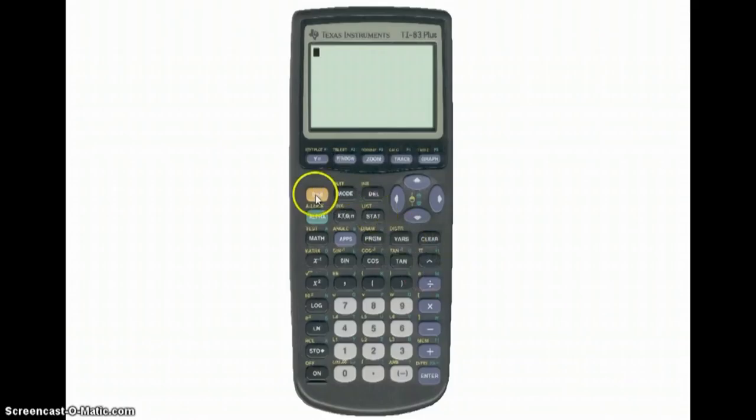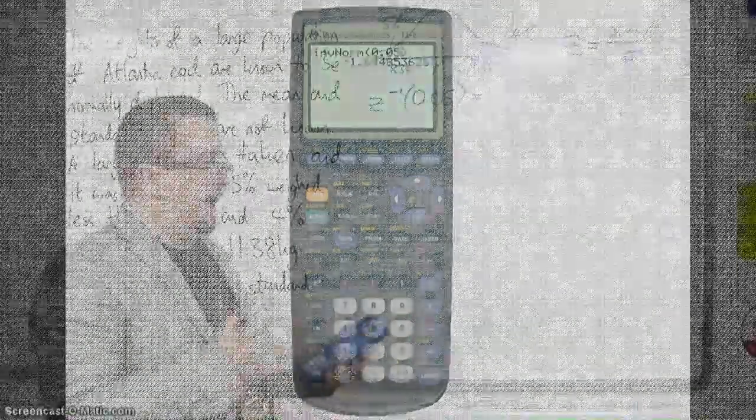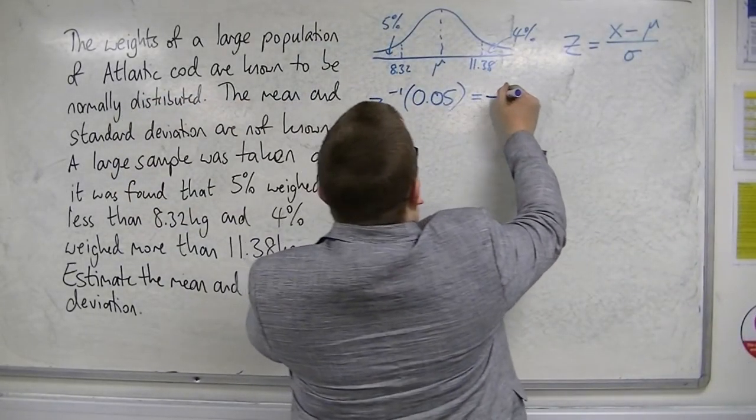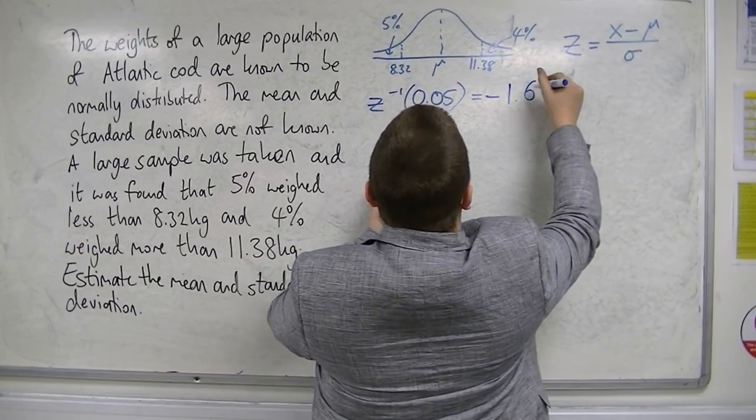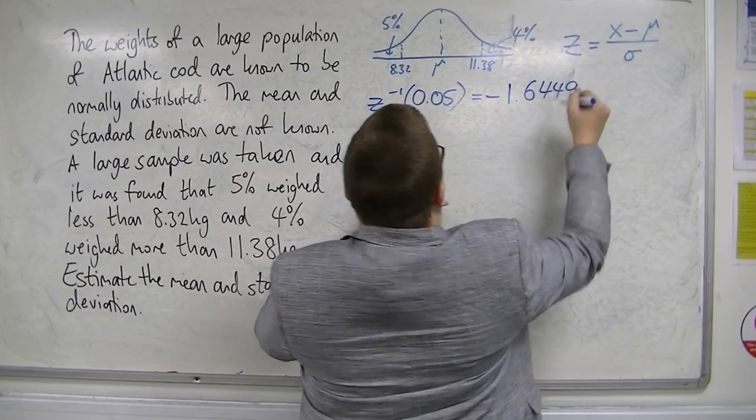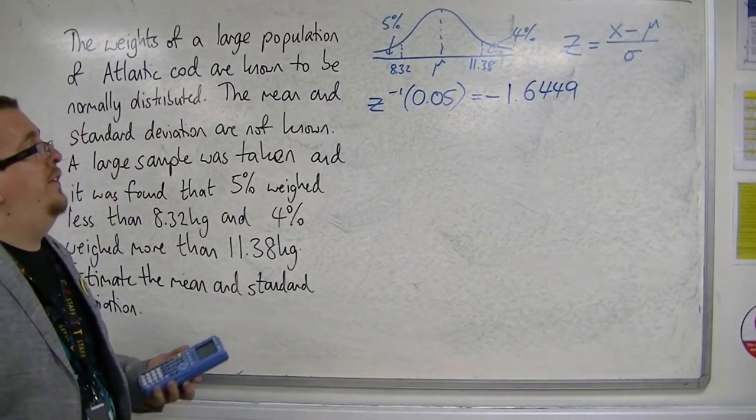We go into second, into the distributions, VARS, go down to inverse norm, 0.05, close the bracket, press enter. So our z statistic is minus 1.644853626. We've got minus 1.6449, I'm going to do it to 4 decimal places here.